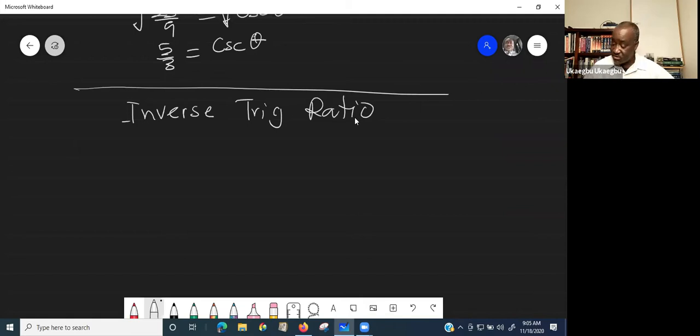Inverse trig ratio. So now, if you're giving a triangle that looks like this, just giving a triangle, and you have maybe a certain angle, maybe here is the angle theta, and they give you something that looks like this.